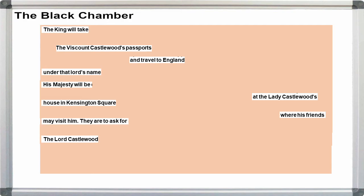The king will take the Viscount Castlewood's passports and travel to England under that lord's name. His majesty will be at the Lady Castlewood's house in Kensington Square, where his friends may visit him. They are to ask for the Lord Castlewood.